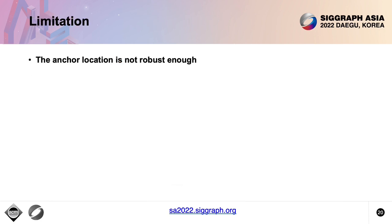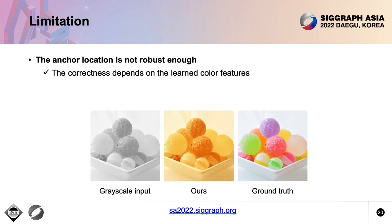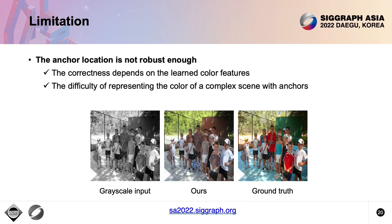The main limitation of our method comes from anchor location. When the input image has objects unseen from the training set, the learned color features could be less distinguishable, making anchor location unreliable. Besides, our method may generate desaturated colors when the anchor fails to represent the color distribution of a complex object. The number of anchors also has to be preset empirically, which introduces a trade-off issue.